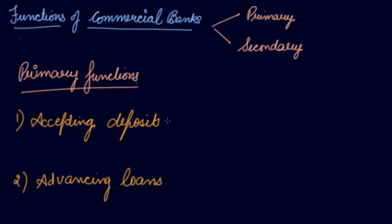These are the two primary functions that your bank performs, and they are the source of bank income. When you go to the bank, you open an account and deposit your money. Banks accept deposits from the public. People can deposit their cash balance as checkable deposits or non-checkable deposits. FDs and RDs are non-checkable deposits; demand deposits are checkable deposits. Checkable deposits are those against which a cheque can be issued.